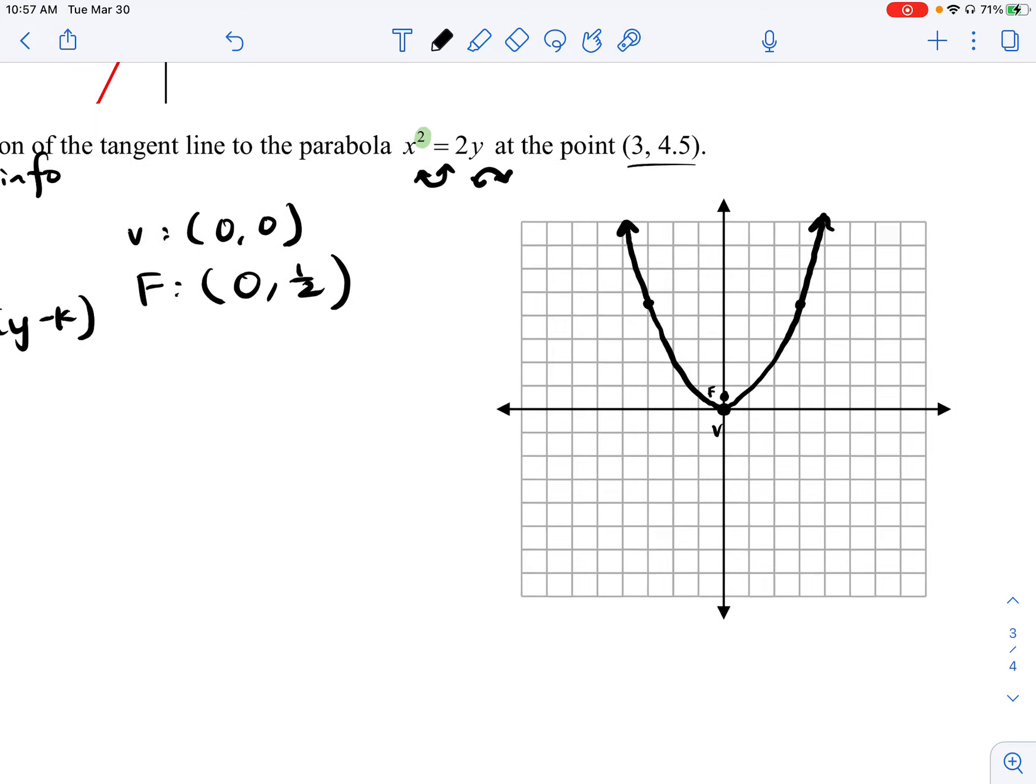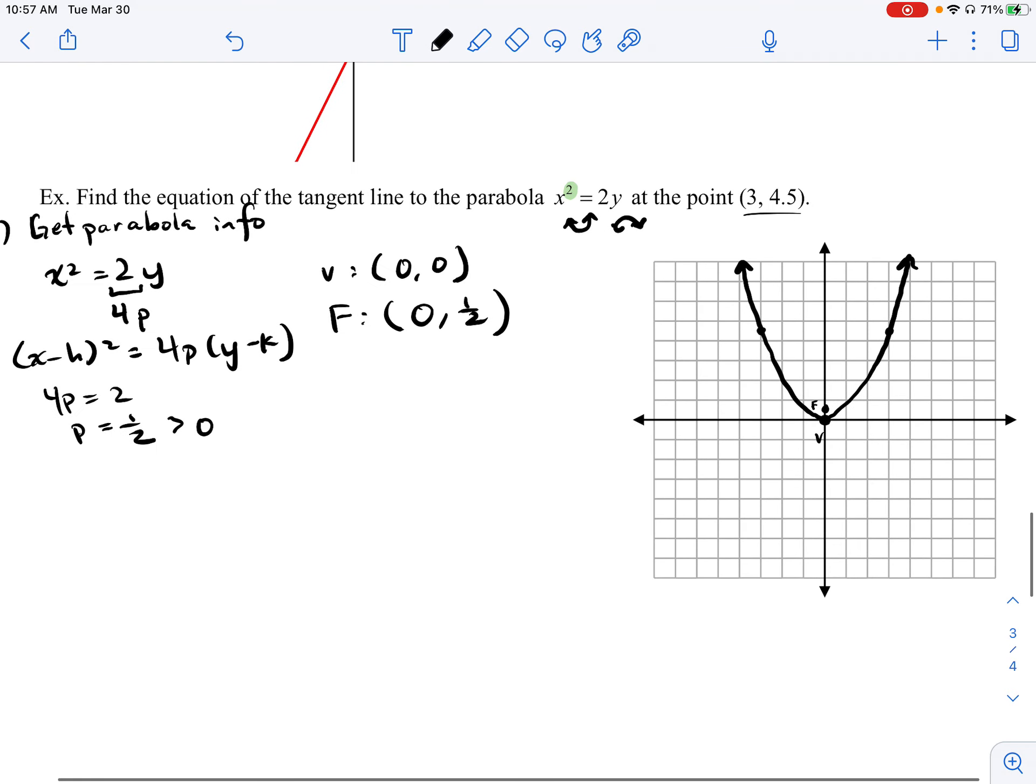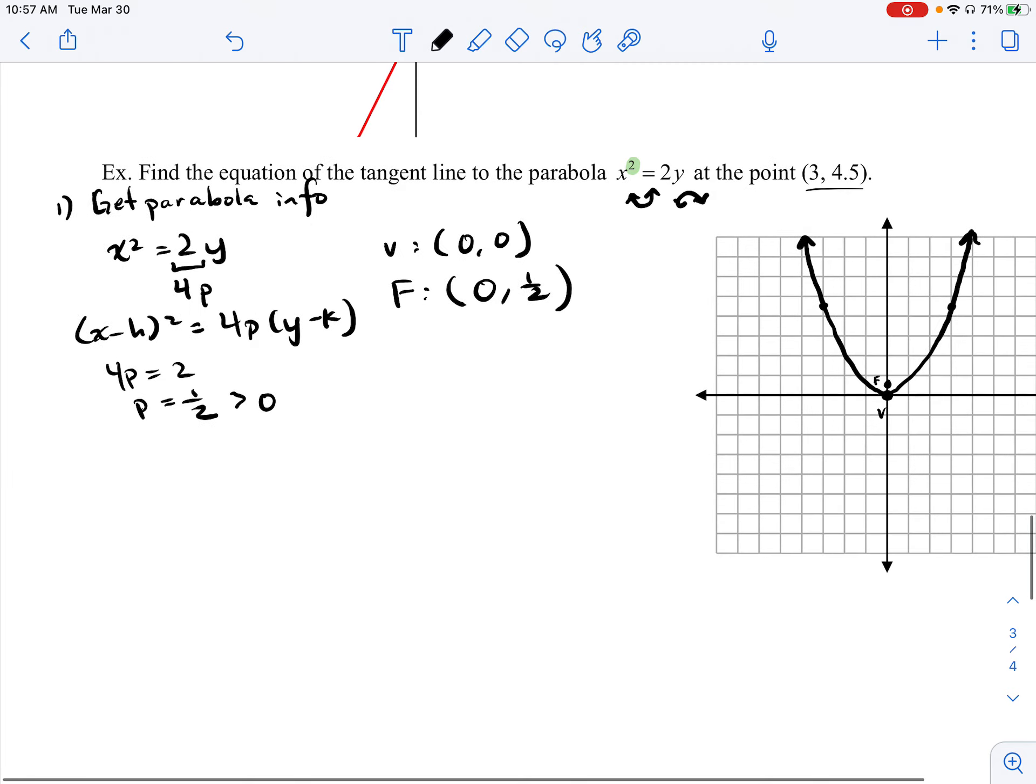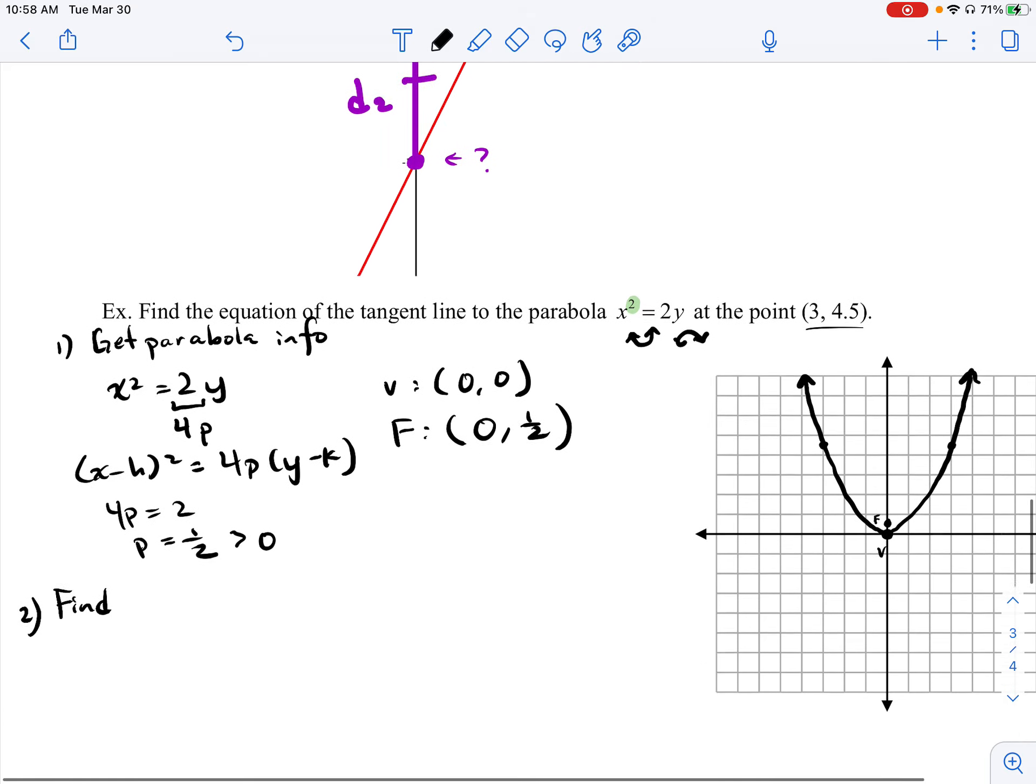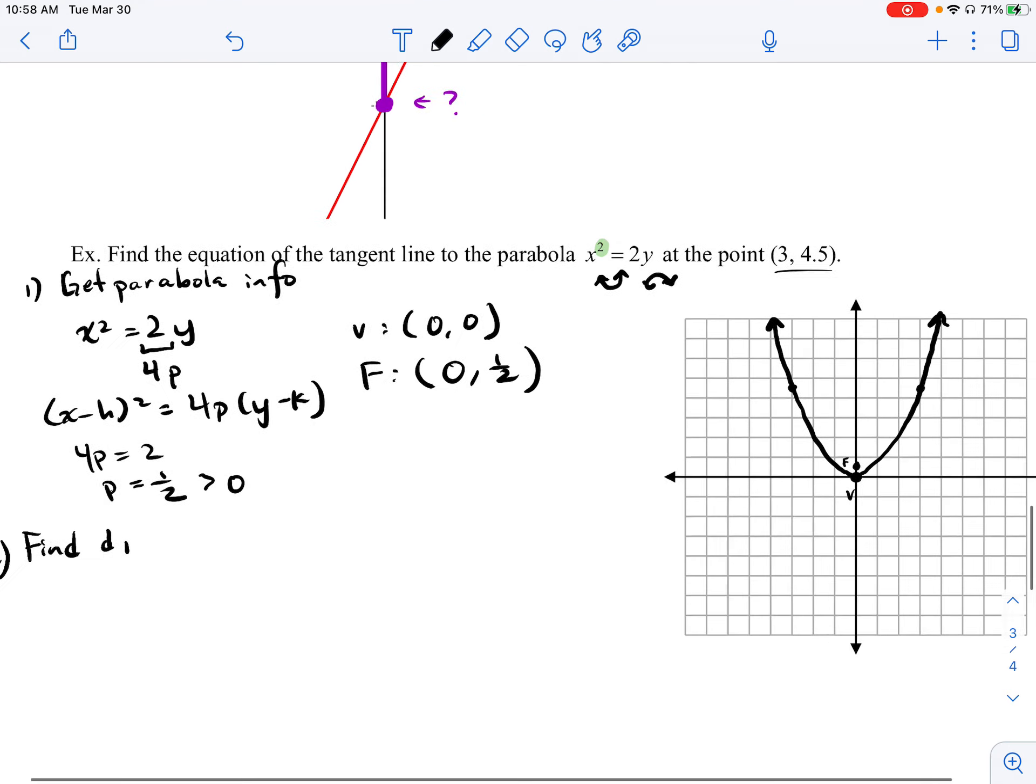So we actually are able to get a pretty decent amount of information from that. We know it opens upward. So the next thing that we're going to do, let's find this D1 value.